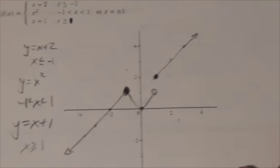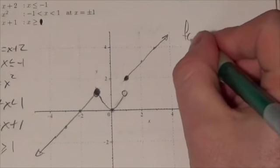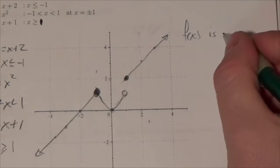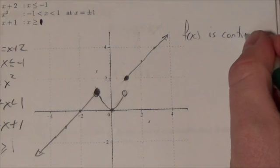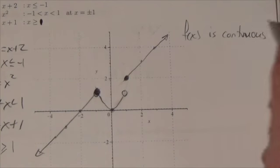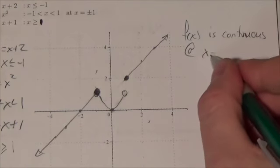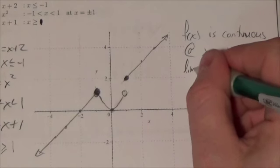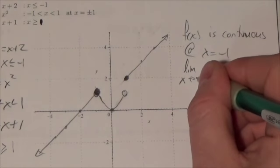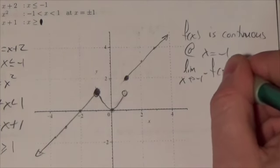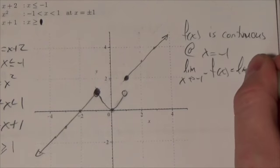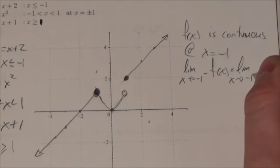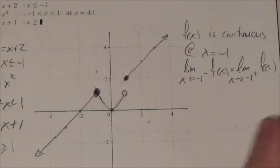Now, let's discuss continuity. Well, f of x is continuous at x equals negative 1, and that is because the limit as x approaches negative 1 from the left of f of x equals the limit as x approaches negative 1 from the right of f of x. They're both the same.